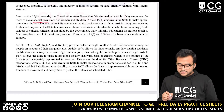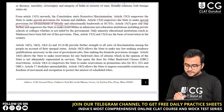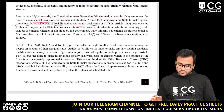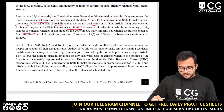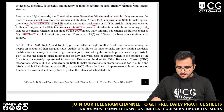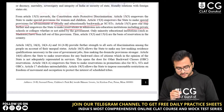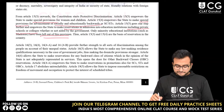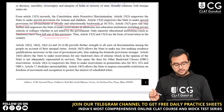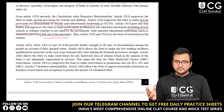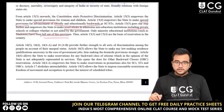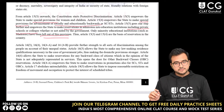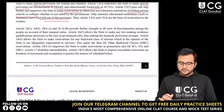Article 15, Clause 4 empowers the state to make special provisions for the advancement of socially and educationally backward classes, or SCs or STs. Article 15, Clause 5 goes one step further and empowers the state to make reservations in admission into educational institutions, including private schools or colleges, whether or not aided by the government. However, minority educational institutions such as madarsas have been left out of this provision, meaning this reservation law will not apply to minority educational institutions such as madarsas or missionary schools. Thus, Article 15, Clauses 3 and 4 are the basic basis of reservation in the country.